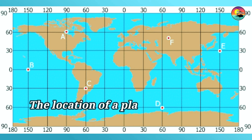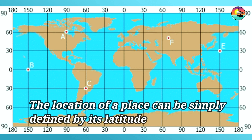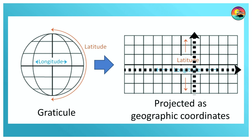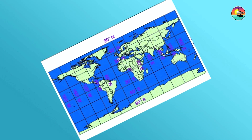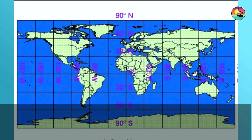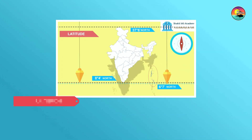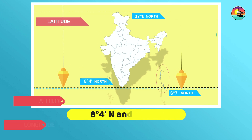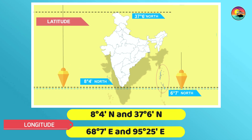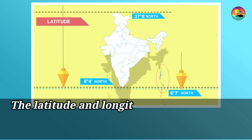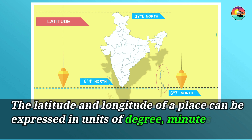The locus of a place can be simply defined by its latitude and longitude. In normal practice, latitude is stated first and then comes longitude. The latitude and longitude of a place can be expressed in degrees, minutes, and seconds.